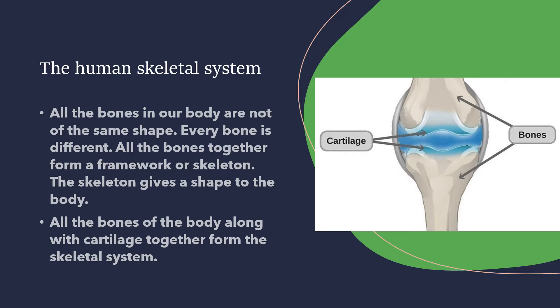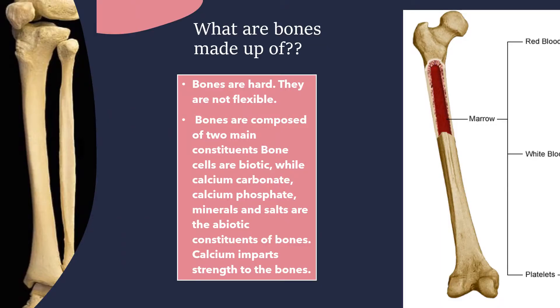All the bones of the body along with cartilage together form the skeletal system. Cartilage works alongside the bones in the body, allowing the bones to move and function. The bones are hard and not flexible.